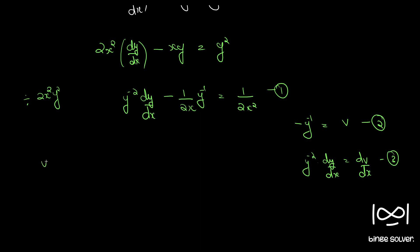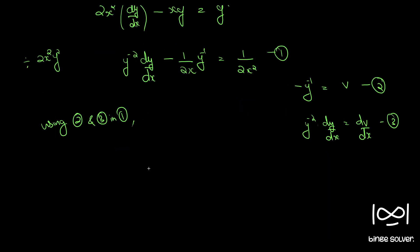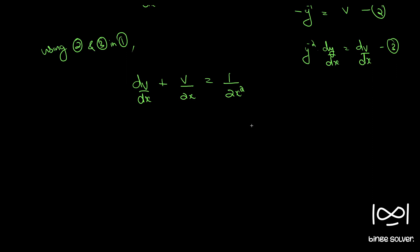Using equations 2 and 3 in equation 1, we have dv by dx plus v by 2x is equal to 1 by 2x squared. This is in the standard form of a linear differential equation: dv by dx plus pv equal to q, where p and q are either constants or functions of x alone. Here p is 1 by 2x and q is 1 by 2x squared — both functions of x alone.